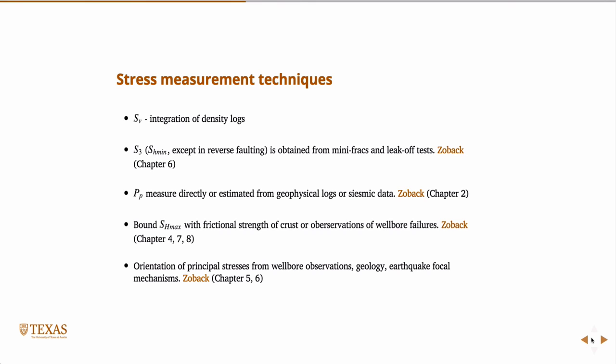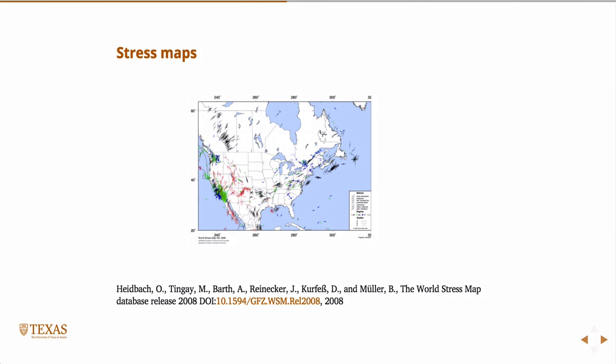Also, just the geology and earthquake focal mechanisms can also be helpful. The earthquake data can be helpful in areas where you have very large differences in principal stresses, but in areas where the difference in principal stresses are small, it can be difficult to determine directions that way. And that's actually the case in California. We have a ton of earthquake data in California, but it's not that reliable in terms of the stress directions.